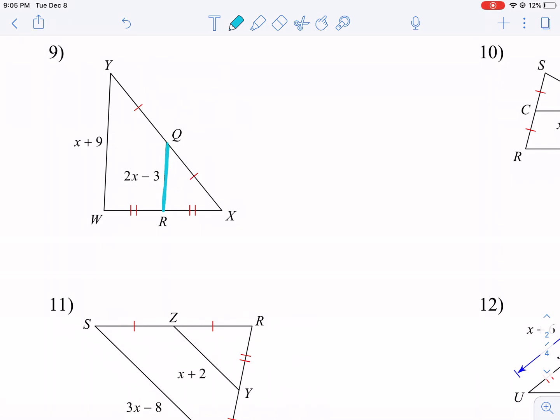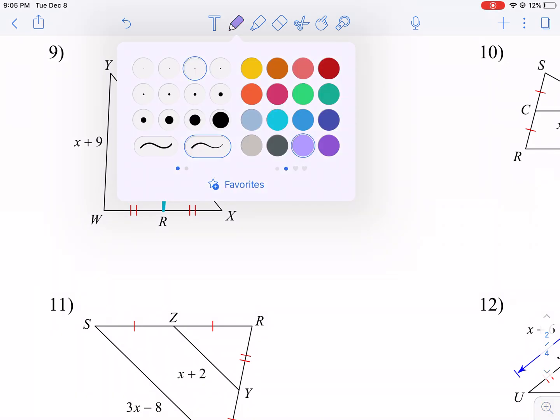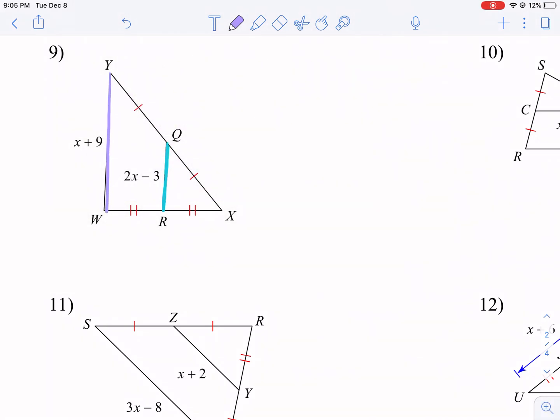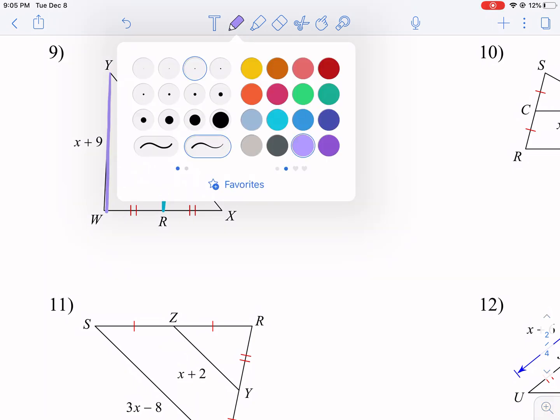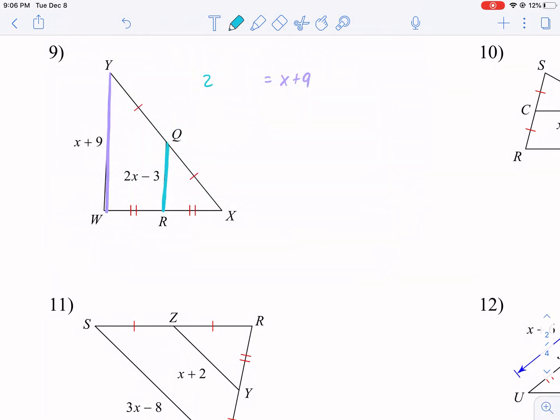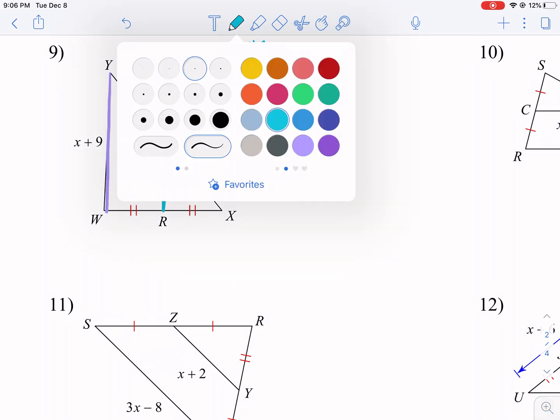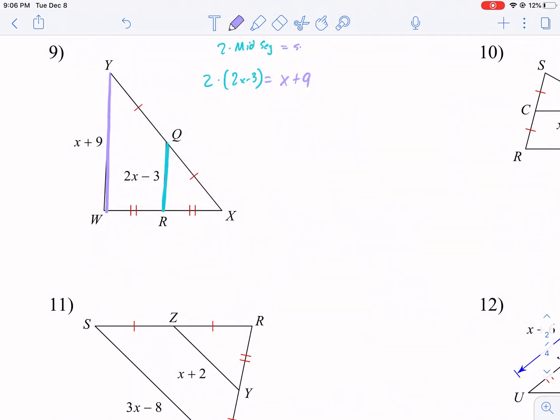So we have that this segment right here, this is our mid-segment, and this is going to be our long side. So we know x plus 9 equals double that side, 2 times, and we're going to put this in parentheses, 2 times 2x minus 3. Just as a refresher, it's 2 times the mid-segment equals our side. And that's what we're just plugging in here.